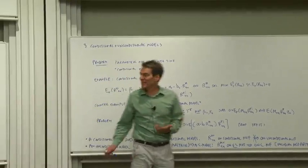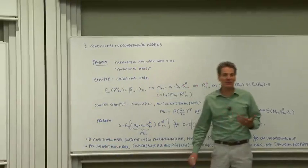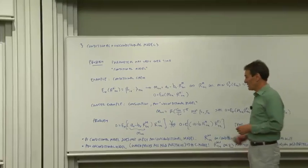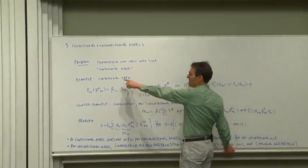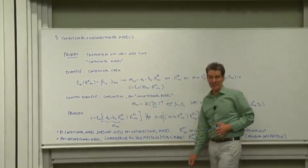A problem is that the parameters of a model may vary over time. That's what I call a conditional model. A classic example is the conditional capital asset pricing model.